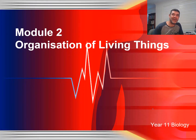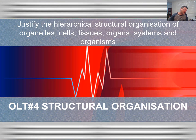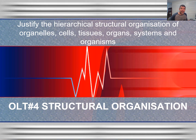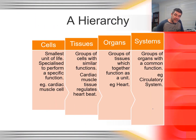Hi students, welcome to Year 11 Biology and module number two: the organization of living things. This is video number four, and we're going to be justifying the hierarchical structural organization of organelles, cells, tissues, organs, systems, and organisms. In simple terms, we're going to look at why each of these components of living things forms a hierarchy, or at least some sort of order. The first thing we need to look at is that if we're going to talk about a hierarchy, we need something that has some sort of progression.